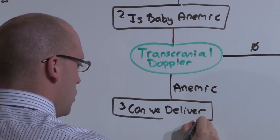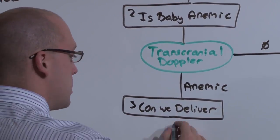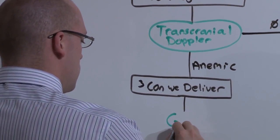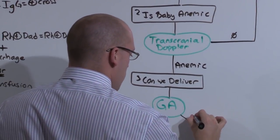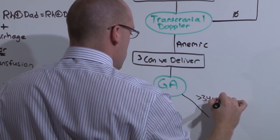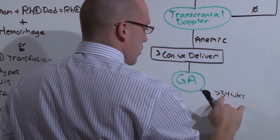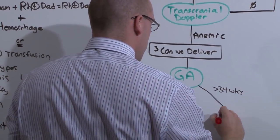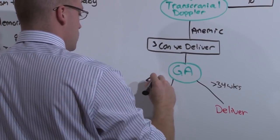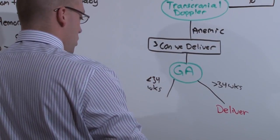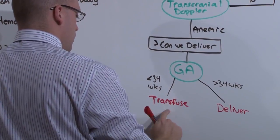But if the transcranial Doppler shows the baby is anemic, the question you have to ask is can we deliver? Because fetal anemia can kill baby, the treatment for fetal anemia can kill baby. So you make the decision based on gestational age. Will baby benefit from more time in the oven? And that is if the gestational age is greater than 34 weeks, a little prematurity is worth the risk of transfusion. So if it's greater than 34 weeks, you simply deliver. If there's less than 34 weeks, you're going to transfuse.